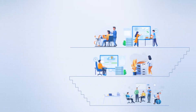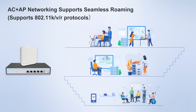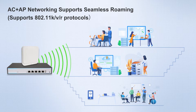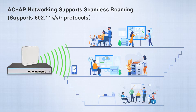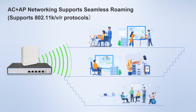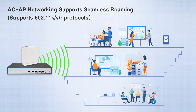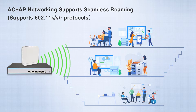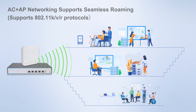These two networking methods each have their own advantages and disadvantages. The greatest advantage of an AC plus AP setup is seamless roaming support. This method supports 802.11K/V/R protocols to ensure you can switch smoothly without interrupting the network connection wherever you go in the house.